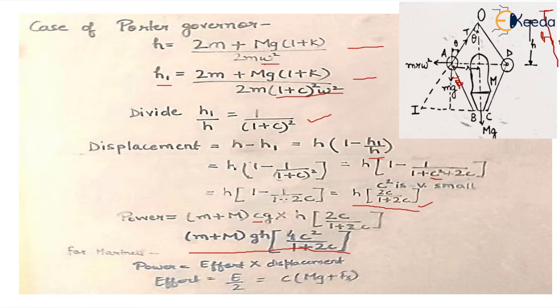Now what is the displacement? Displacement is the change in height which is h minus h1. So in this equation, if we take h common, it becomes 1 minus h1 upon h. And what is h1 upon h? It is this factor 1 upon (1+c) whole squared.